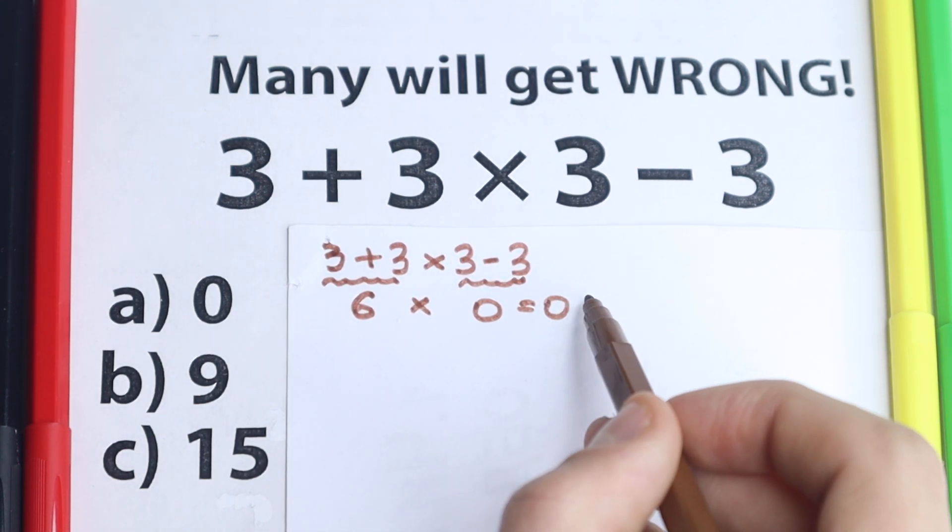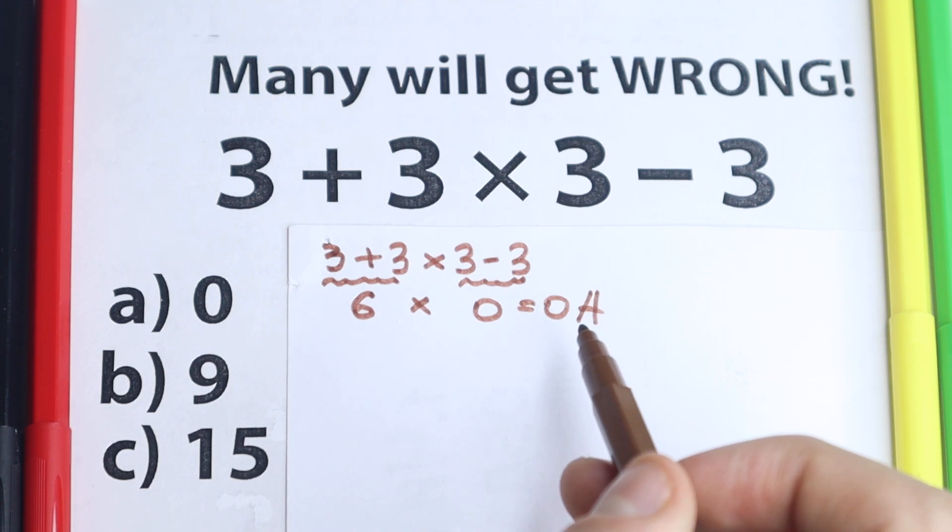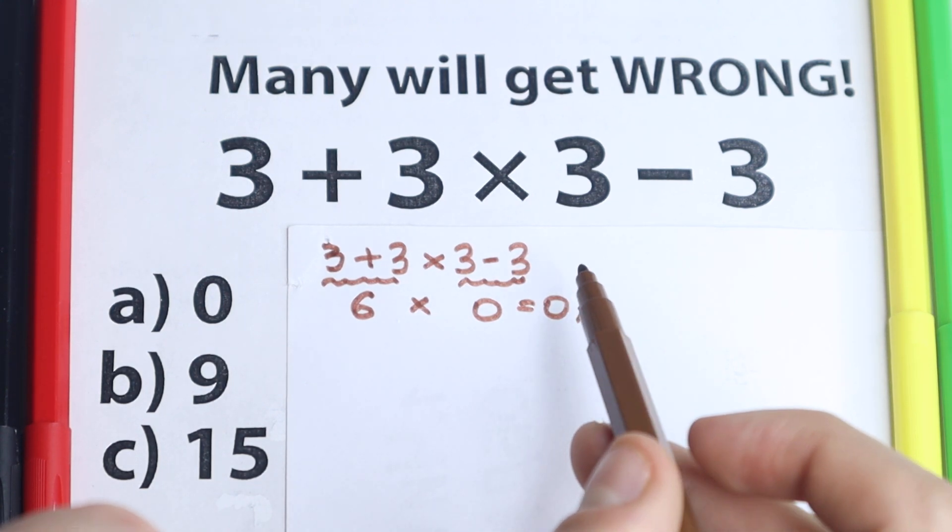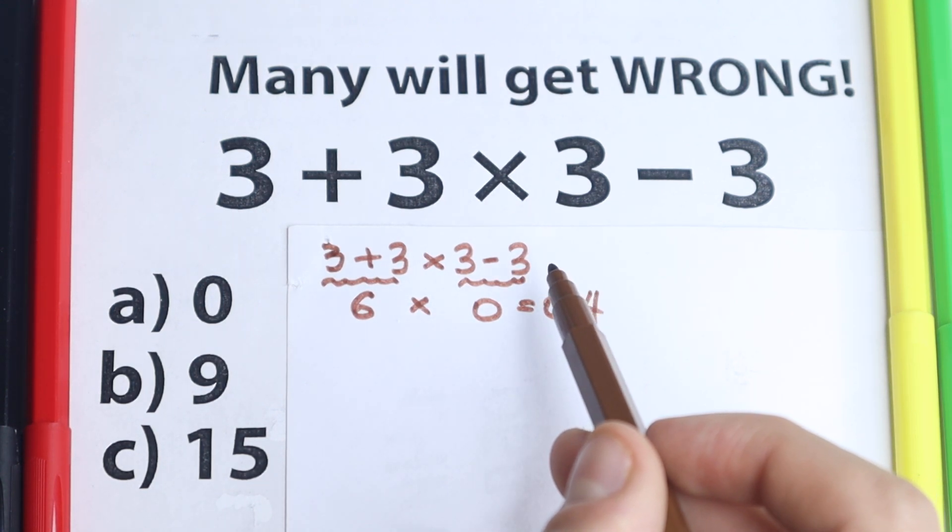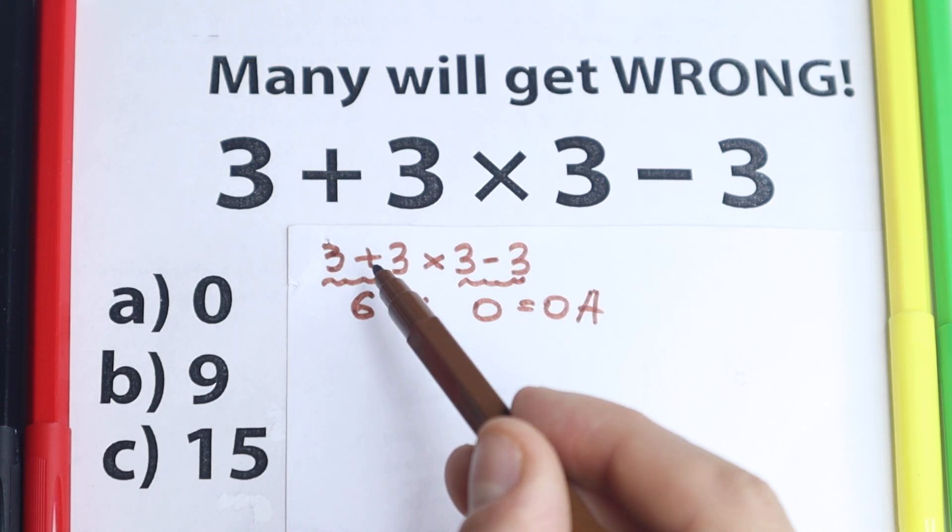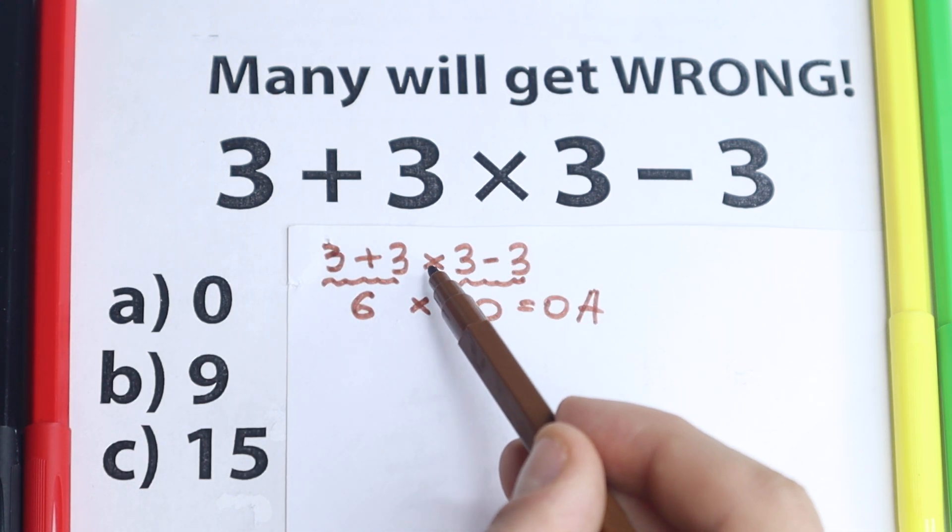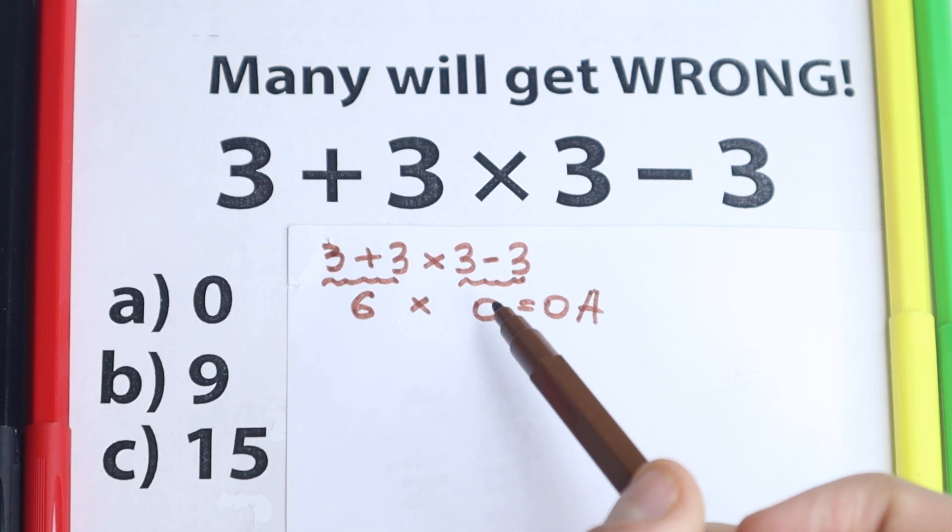I don't want to say this is correct or incorrect. I just want you to understand that we need to know the correct order of operation for this question. As you can see we jump from left to right, from right to left. We add it, subtract it, and the last step is multiplication. Is it correct or incorrect?